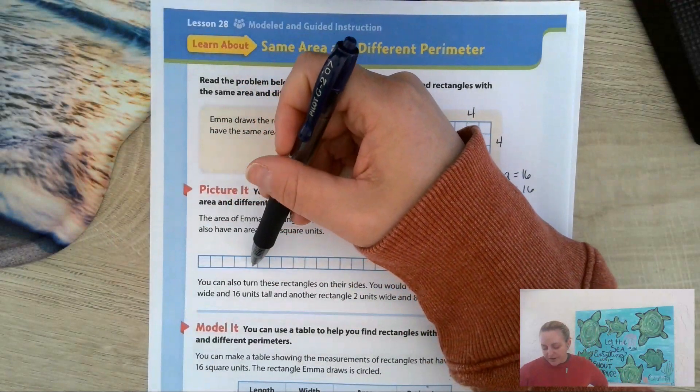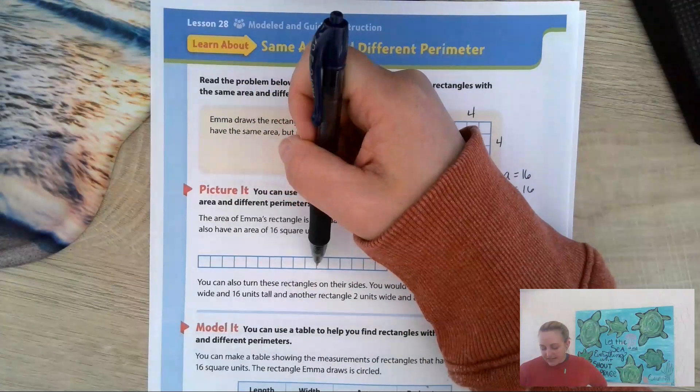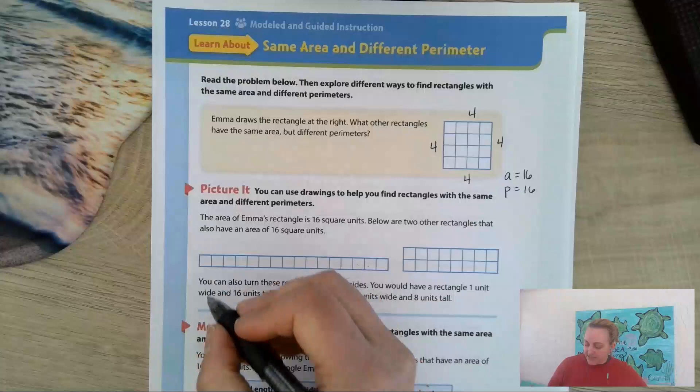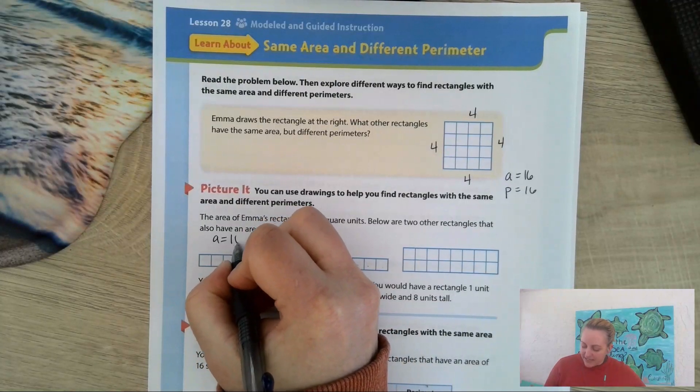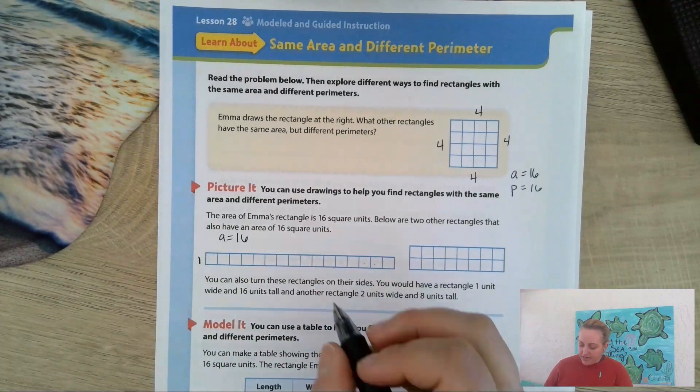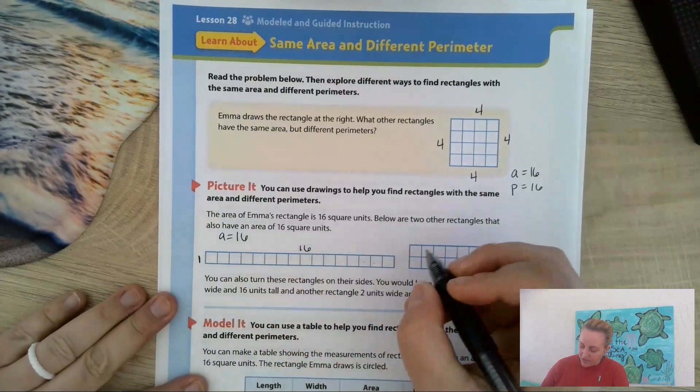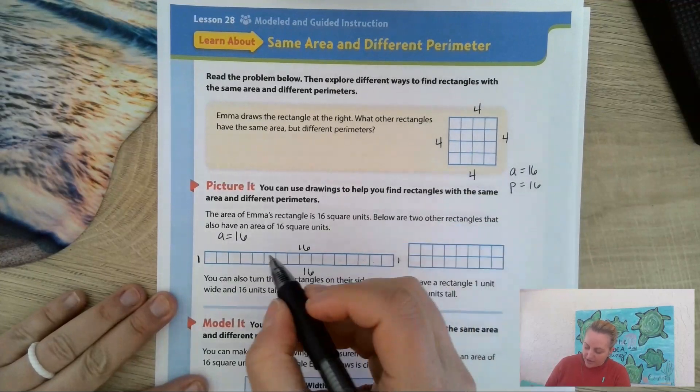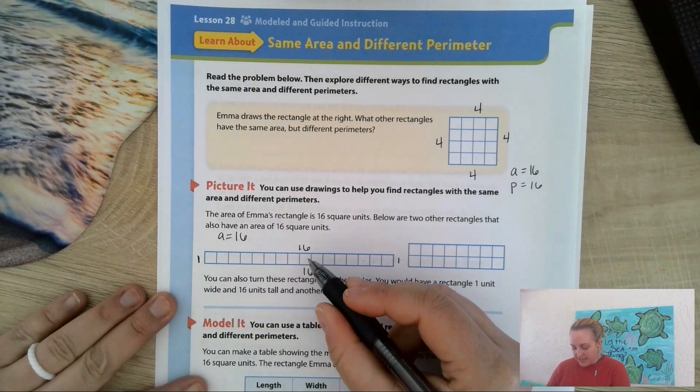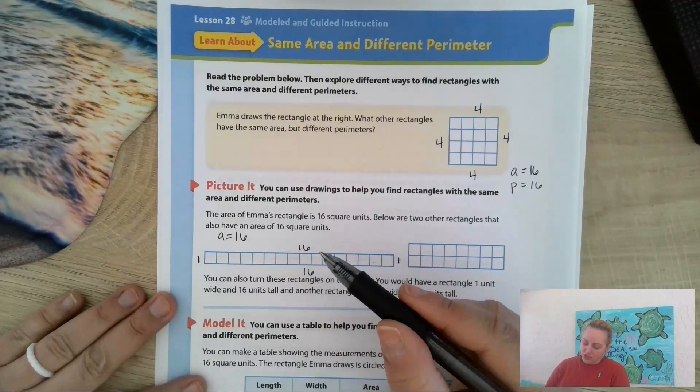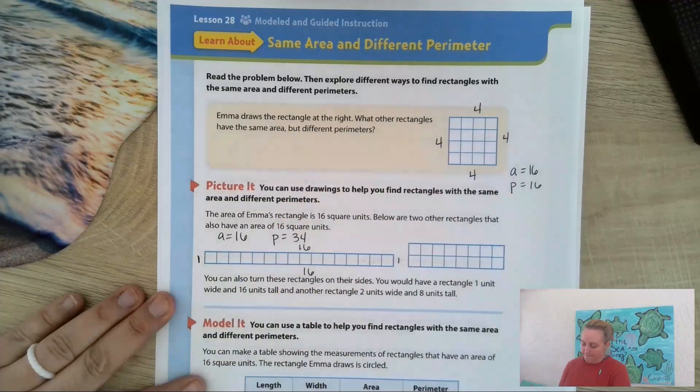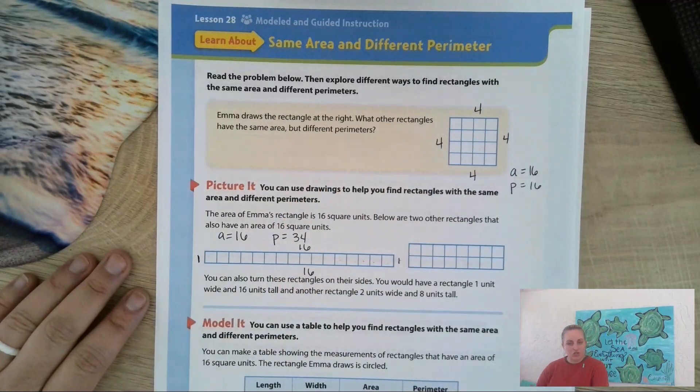If I count them, they're still 1, 2, 3, 4, 5, 6, 7, 8, 9, 10, 11, 12, 13, 14, 15, 16. There's still 16 squares. So this one, the area is still 16, but it's only one up and it's 16 across. So I would be adding 1 plus 16 plus 1 plus 16. Well, 16 plus 16 is 32, 33, 34. So the perimeter on this one is 34.